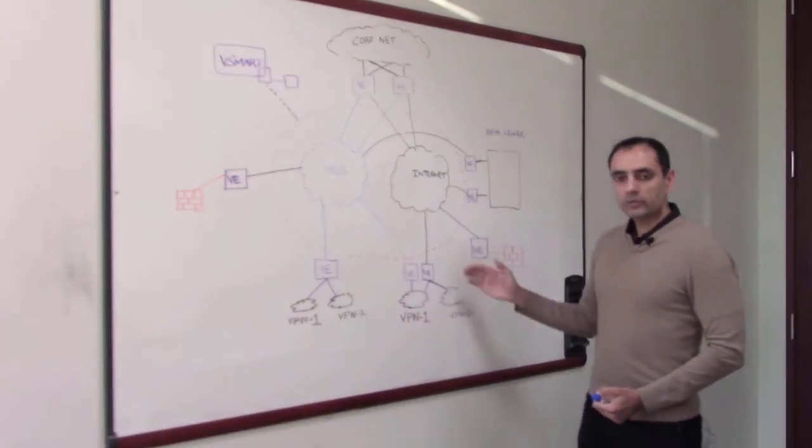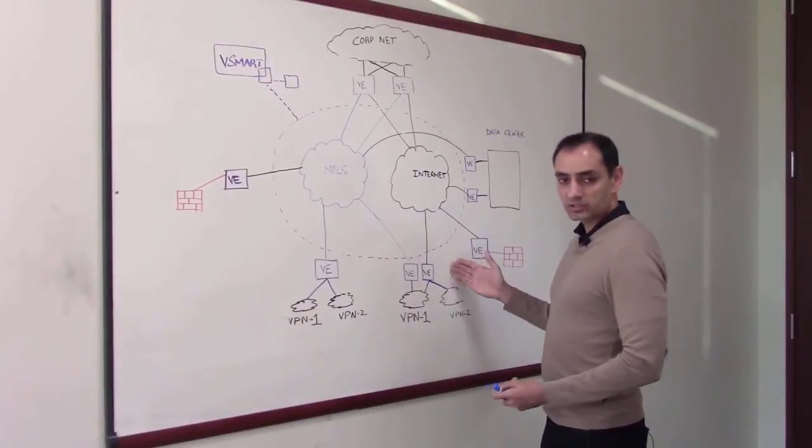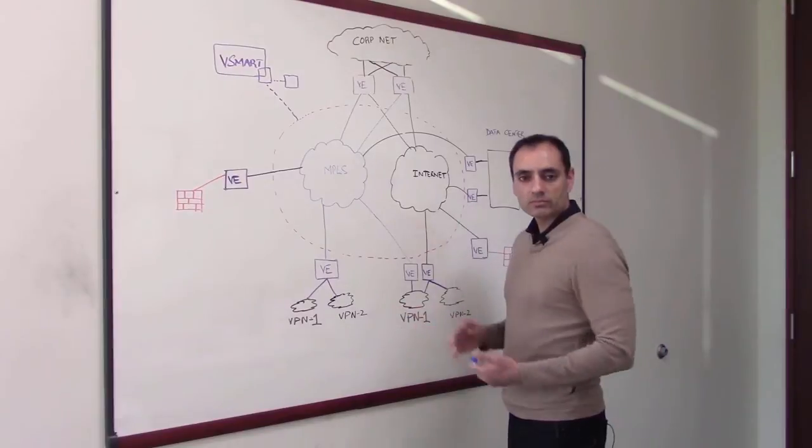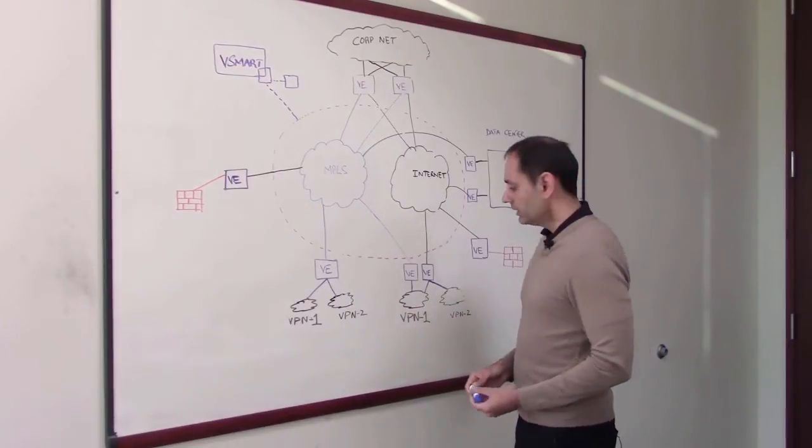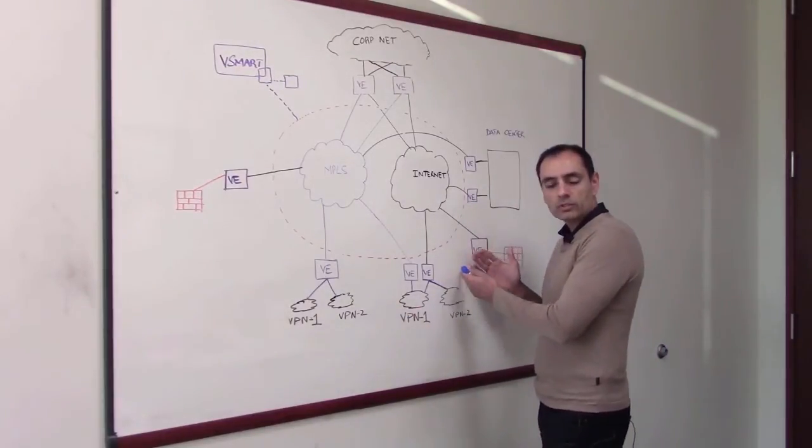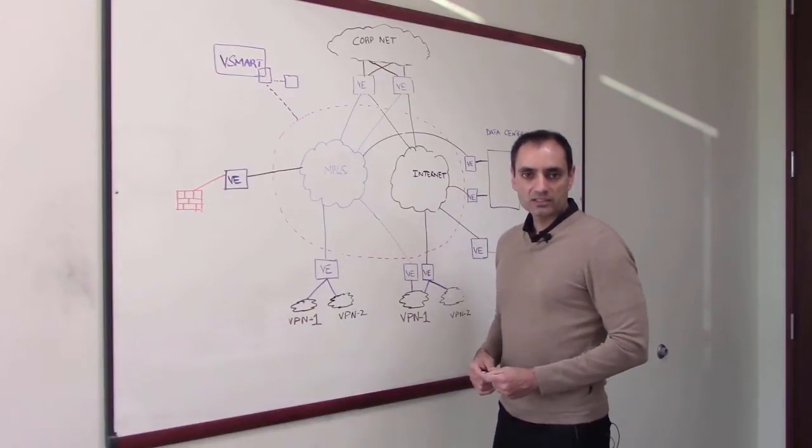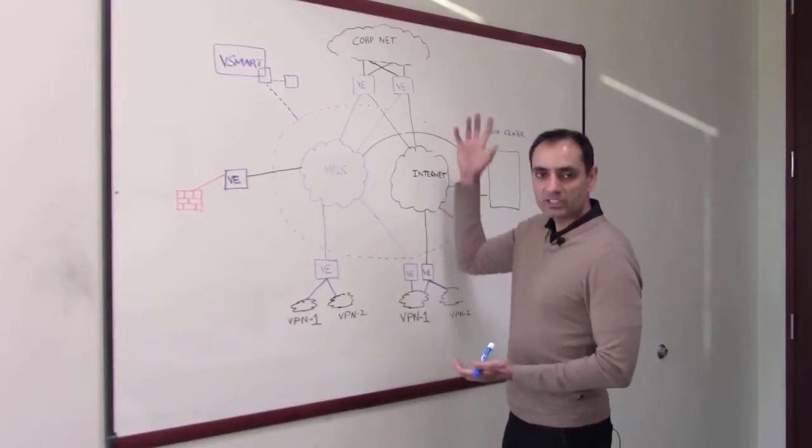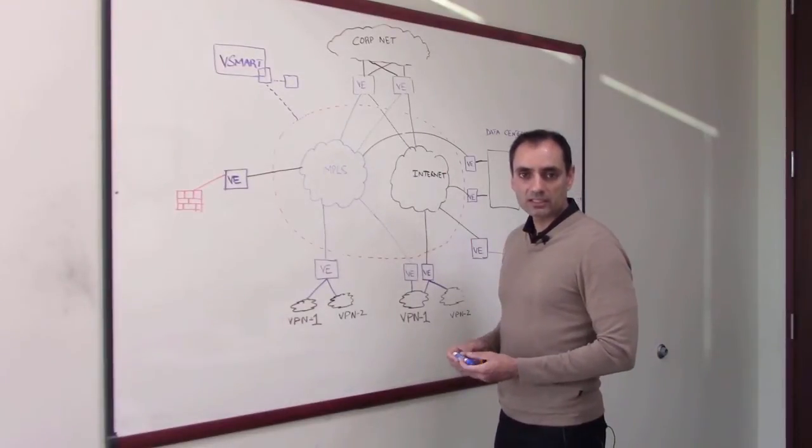Now the next thing I would mention is, here I gave you an example of the firewall, but you would have different types of services as well. You could have a traffic analyzer sitting somewhere and you want to virtualize that function. You spin up a traffic analyzer at a given location.